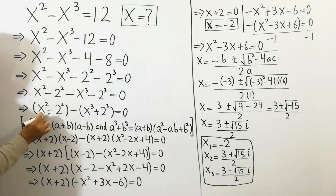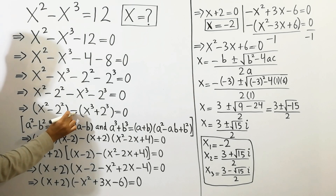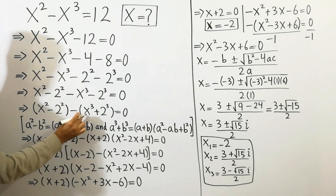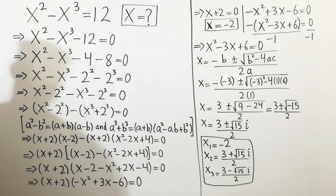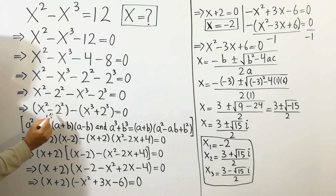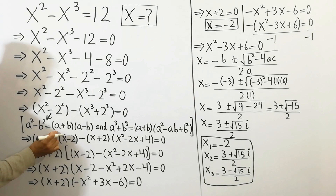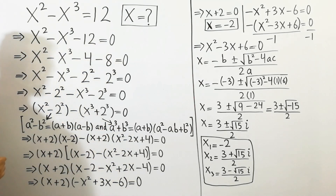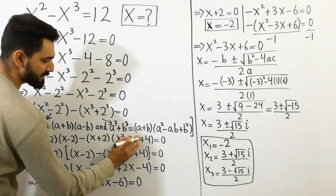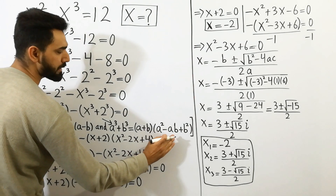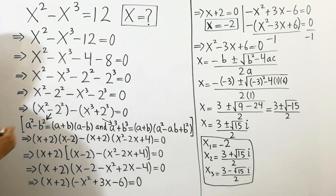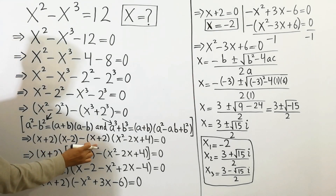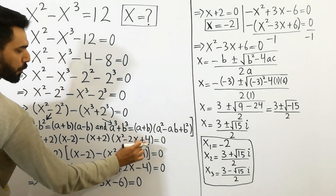And next, x squared minus 2 squared as it is. By taking the common value of minus, we get x cubed plus 2 cubed is equal to 0. As we know that a squared minus b squared equals (a+b)(a−b), and x cubed plus 2 cubed looks like a cubed plus b cubed, which equals (a+b)(a squared minus ab plus b squared). By applying this formula we get x squared minus x cubed plus 4 is equal to 0.